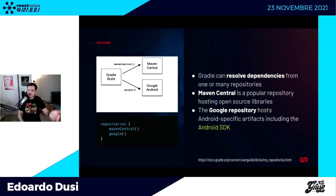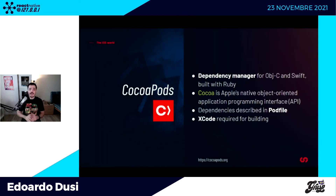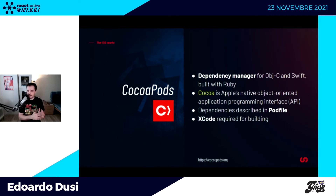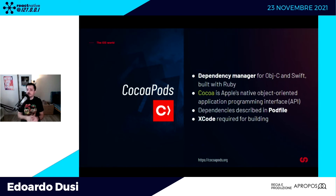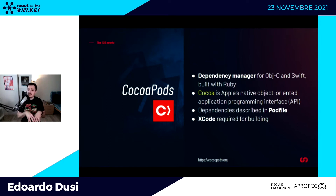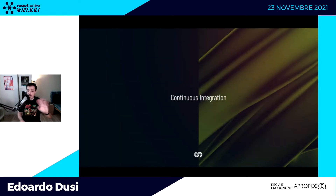Come fa iOS invece a dichiarare le dipendenze? In realtà per buildare non usa CocoaPods: CocoaPods è soltanto per gestire le dipendenze. CocoaPods vi permette di installare dipendenze dichiarate in un Podfile. Per buildare è richiesto Xcode — se volete buildare per iOS è fondamentale avere Xcode, ci sono anche Xcode command line e Xcode build tool. CocoaPods gestisce le dipendenze ed è scritto in Ruby.